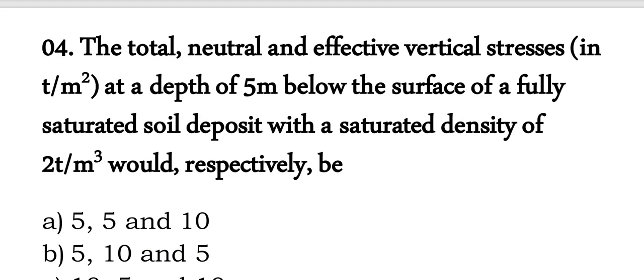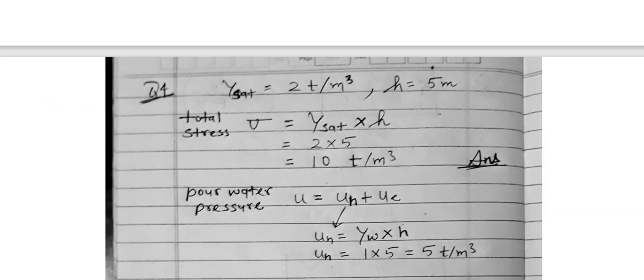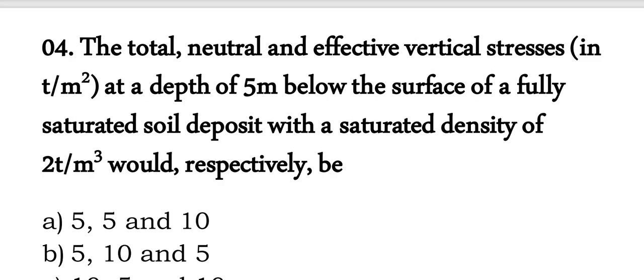Question 4: find the total, neutral, and effective vertical stresses in ton per meter square at a depth of 5 meters below the surface of a fully saturated soil deposit with saturated density of 2 ton per meter cube. Total stress equals saturated density × height = 2 × 5 = 10 ton per meter square. Pore water pressure (neutral stress) equals γ_w × H = 1 × 5 = 5 ton per meter square.